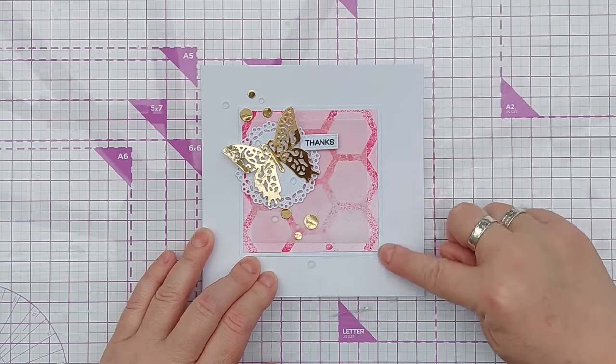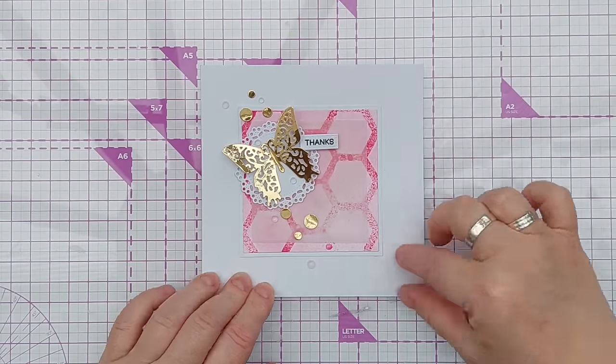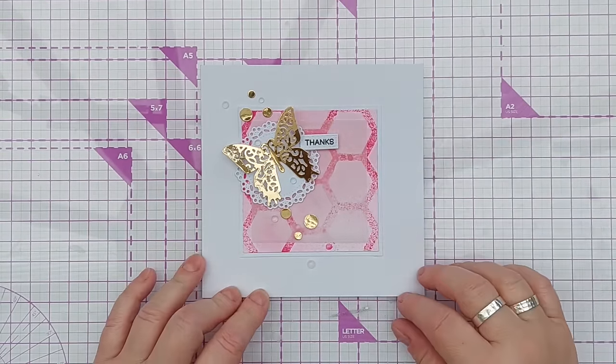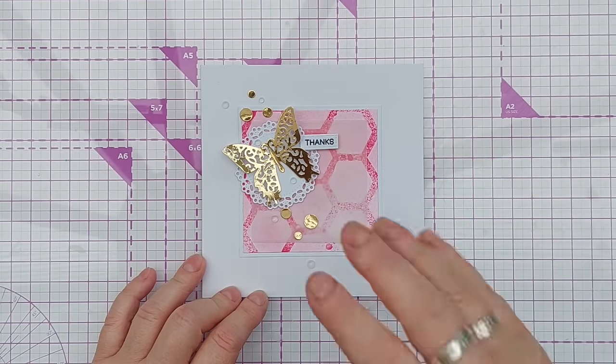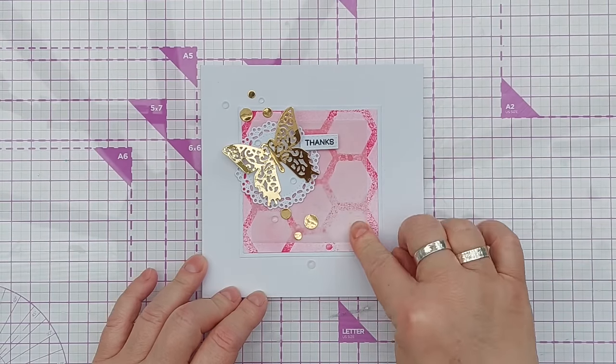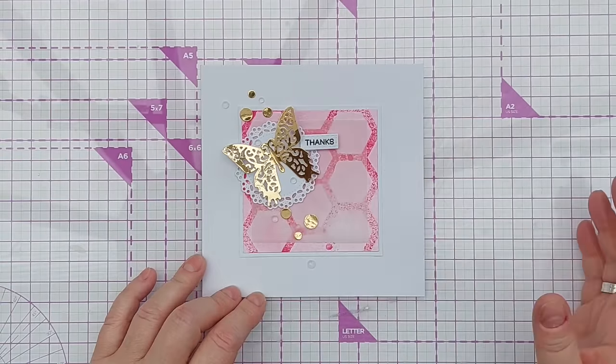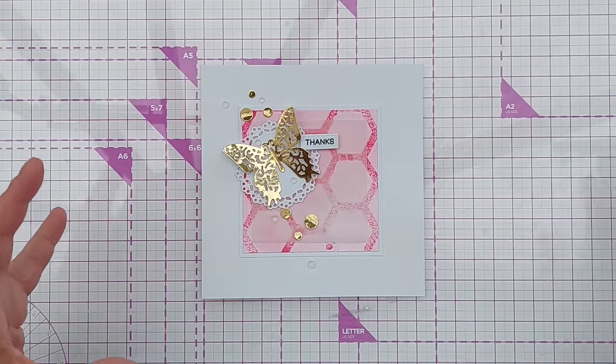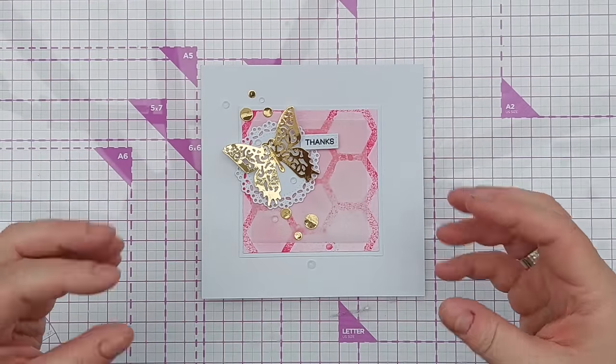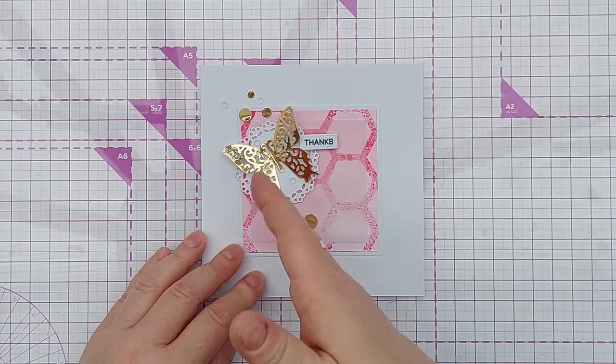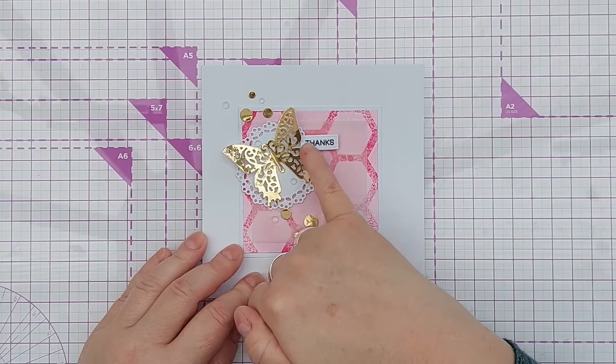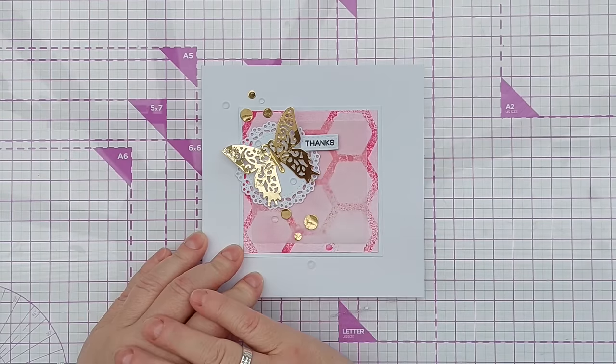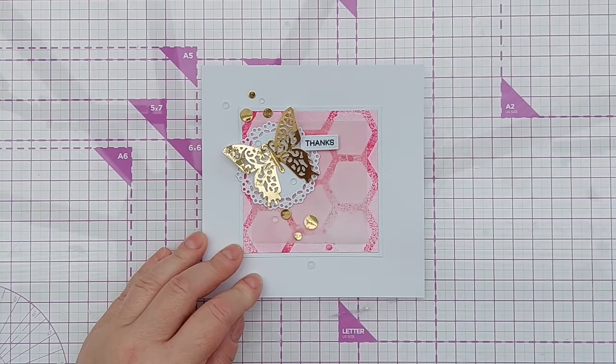So again we've got muting down with white acrylic, muting down with vellum and then introducing white space to keep that boldness contained. Plus we've got the shimmery shiny focal point and having a black sentiment draws the eye to that area again.